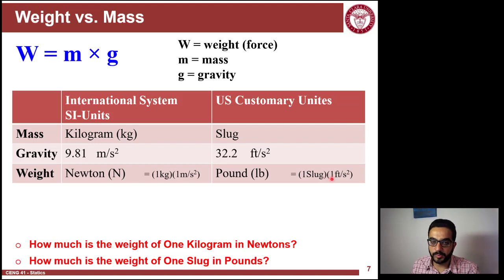The question is: how much is the weight of one kilogram in newtons? You multiply one kilogram times gravity, which gives 9.81 newtons. Similar question on the other side: the weight of one slug is the mass times gravity, which gives 32.2 pounds-force for one slug.